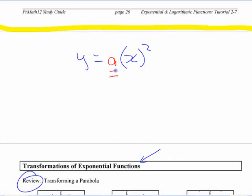In addition to multiplying in front, in grade 11 you added a number on the end. You also made some changes inside those brackets. You added or subtracted a number inside there and looked at what happened with that.